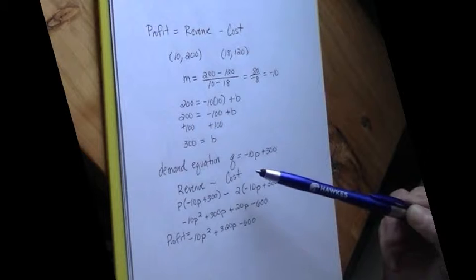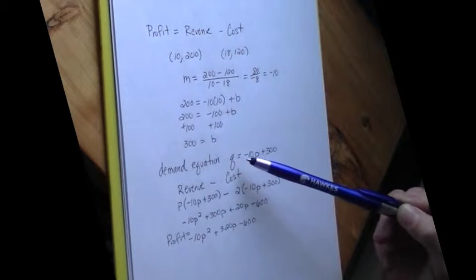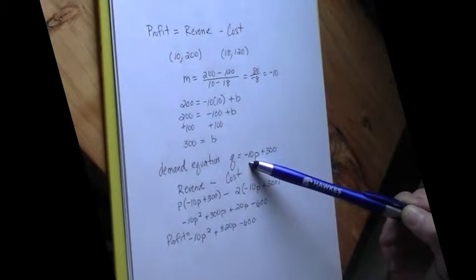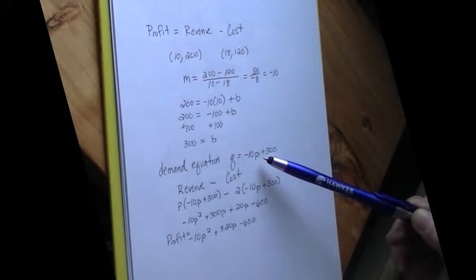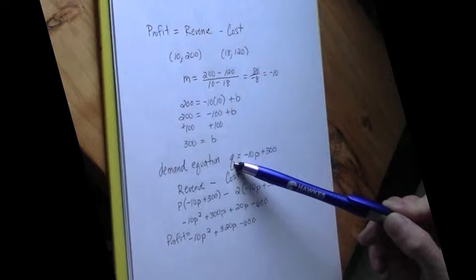Therefore, my demand equation is Q for quantity equals negative 10 times price plus 300. So that's the relationship between the price I set and the quantity I sell.